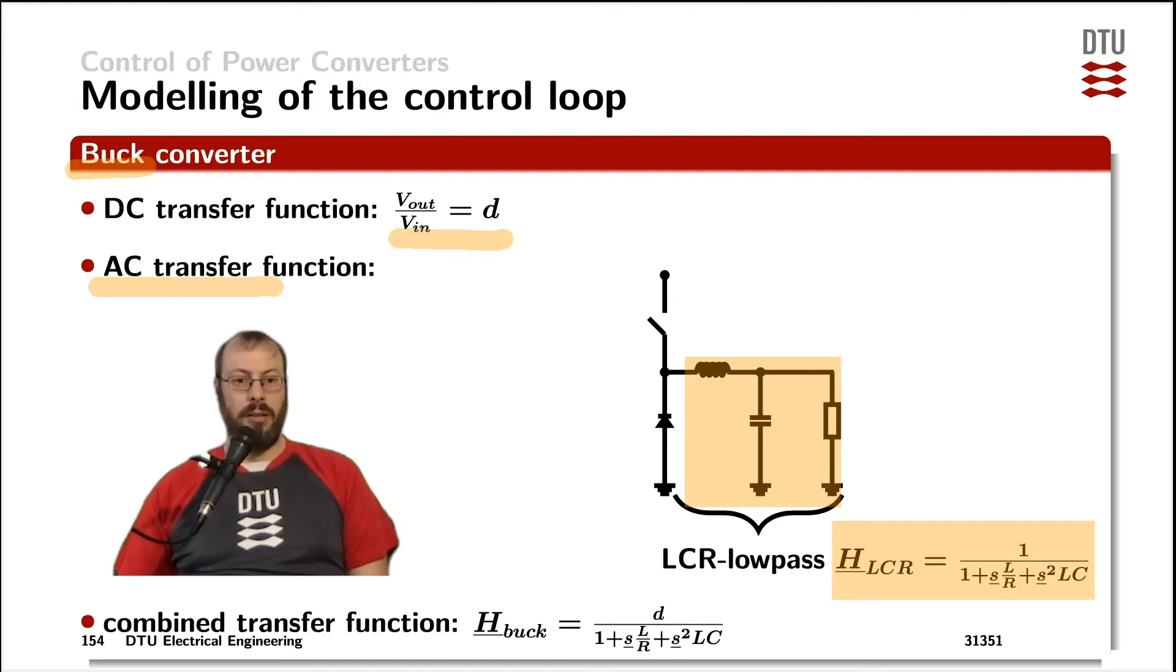So for the case of a buck converter we have the DC transfer function in the denominator and the AC transfer function forms the denominator of the overall transfer function of the buck converter.